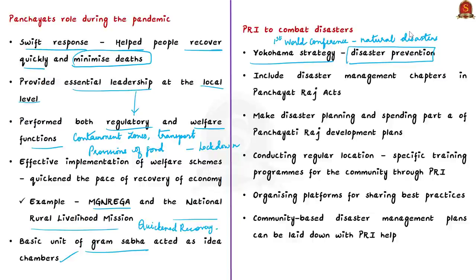On that line, he puts forward Yokohama strategy, which focuses on disaster prevention. For those who are not aware, this Yokohama conference is the first world conference on natural disasters. The author believes that for disaster prevention, these Panchayati Raj institutions can come handy. Now let us see how the author proposes to make this claim a reality.